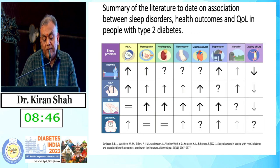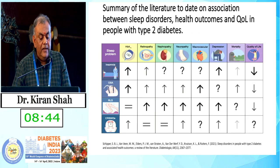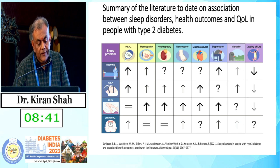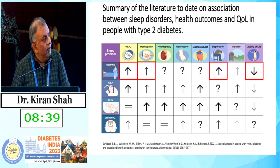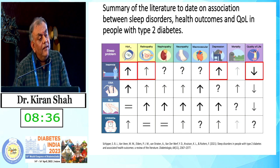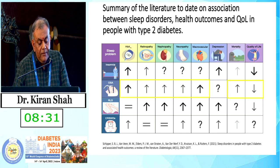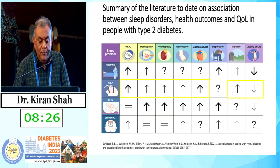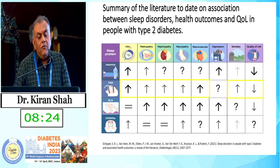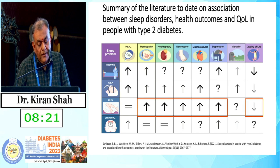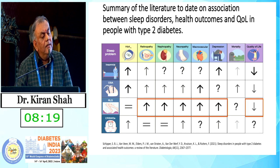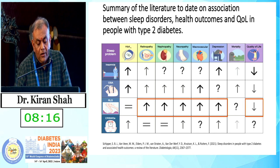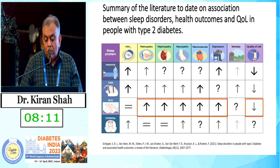Summarizing the literature on the association of sleep disorders with health outcomes and quality of life: sleep insomnia has an effect on glycemia, increases risk of retinopathy, increases depression, and possibly decreases quality of life. Obstructive sleep apnea has effects on glycemia, micro and macrovascular complications, mortality, and quality of life. Restless leg syndrome does not seem to significantly affect glycemic control but has effects on micro and macrovascular complications and decreases quality of life, with no significant effect on mortality.